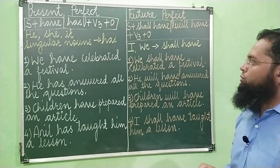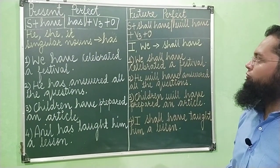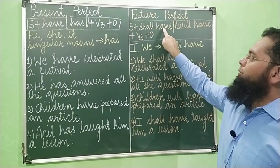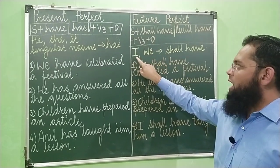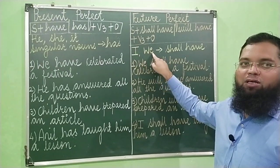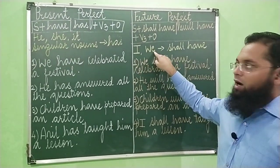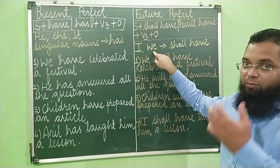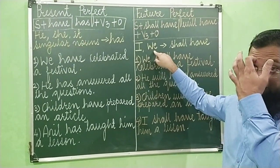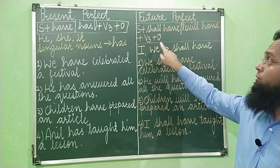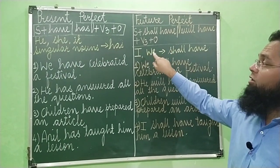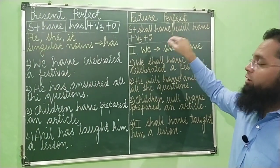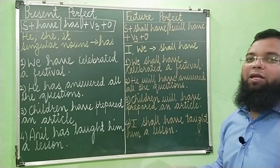So don't get confused. Shall have will be used with the subjects 'I' and 'we' — shall have ka istemal I aur we ke saath hoga. Jitne bhi future tenses hain, shall ka istemal unme I aur we ke saath hoga. And 'will have' will be used with the remaining subjects.